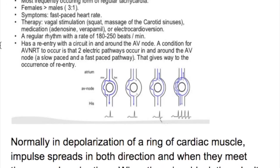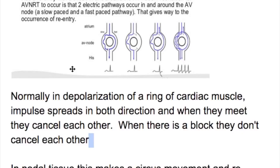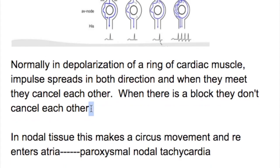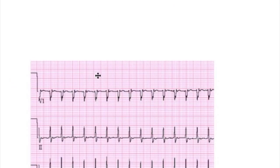AVNRT has a re-entry circuit or circus pathway occurring in two electrical pathways — one slow and one fast — that go around a ring and normally cancel each other when they meet. But if there is a block, they don't cancel, resulting in a rhythm abnormality. In nodal tissue this makes a circus movement and re-enters the atria, leading to paroxysmal nodal atrial tachycardia.